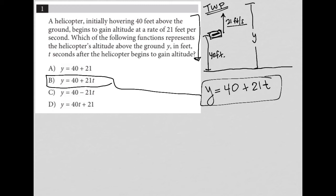But if we said, where do we expect the helicopter to be two seconds after it starts to increase its altitude? We'd say, well, we know that it was at 40 feet to start off with. And we know that we're at 21 feet per second. So that means we should multiply that by two.